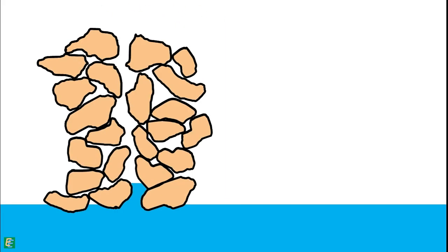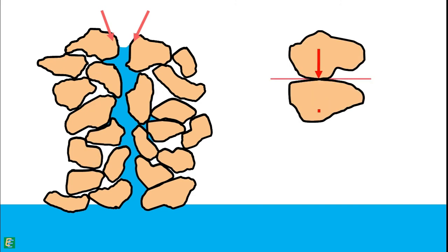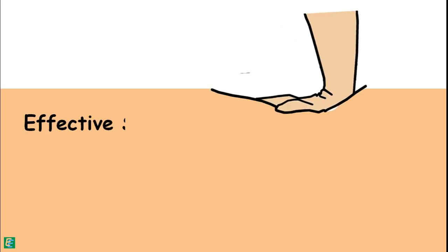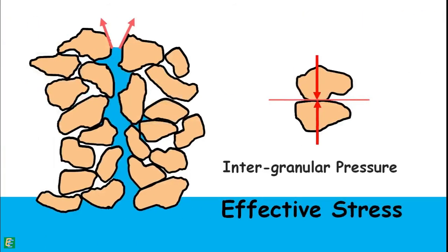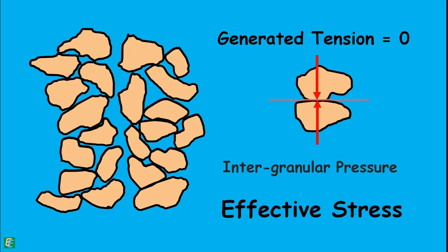Capillary water rises in the soil because it experiences an upward pull on its molecules from the soil particles. Hence, an equal and opposite pull is also experienced on the soil particles in the downward direction. This downward force pulls the soil grains together and intergranular pressure is developed. Therefore, the capillary effect increases the intergranular pressure, which in turn increases the effective stress in soils. However, as the water table rises and saturates the soil, the meniscus formed by capillary action is removed, the tension in the water turns zero, the increased intergranular pressure is lost, and effective stress is reduced.